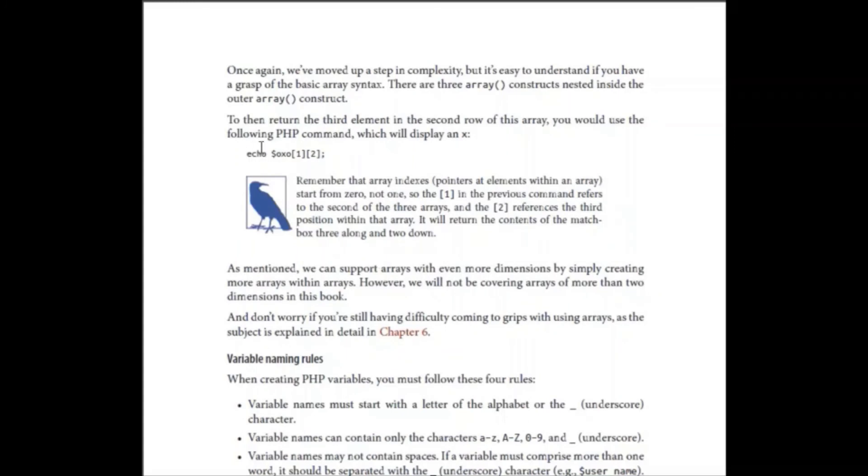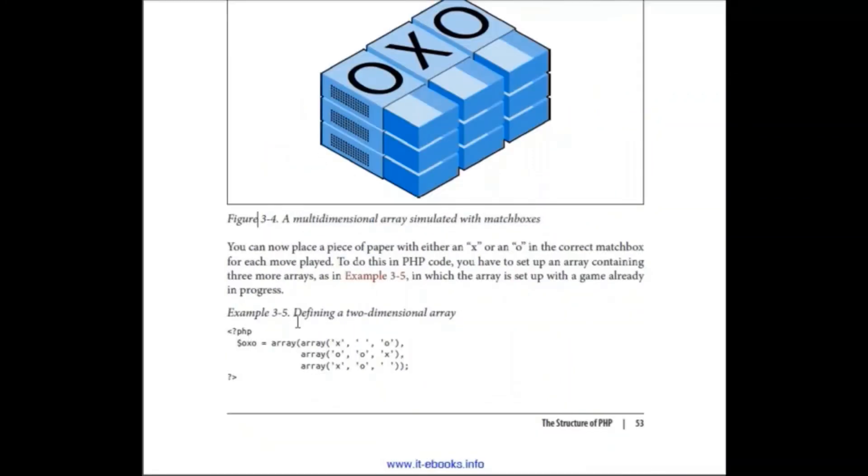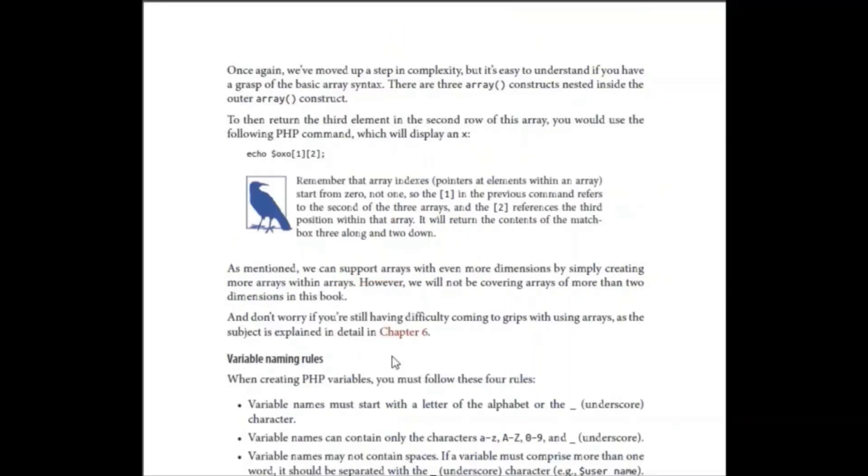Okay, so if we want to access it, OXO[1][2]. Now what it will do? OXO[1] means this one, secondary. And then what? It is two, this one. Zero, one, two. So it will display X.